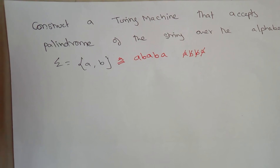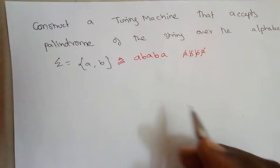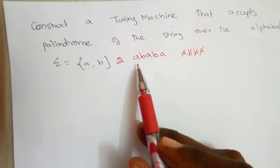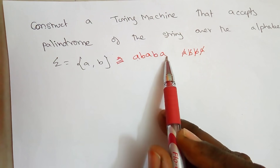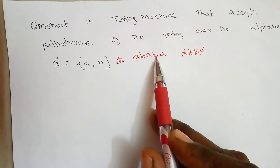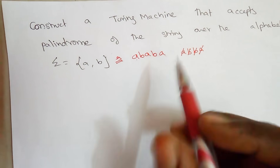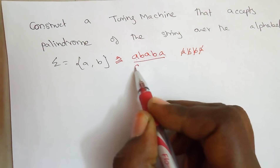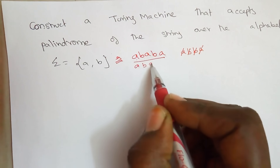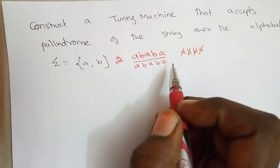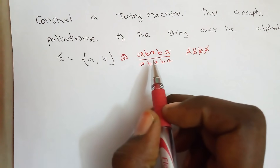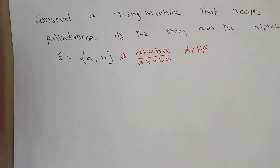A palindrome is a string where the string and its reverse are the same. For example, taking a string made up of A and B — we say it is a palindrome since the first and last letters are the same, the second and second-to-last letters are the same, and so on. When you reverse this string you get A, B, A, B, A — the same as the original.